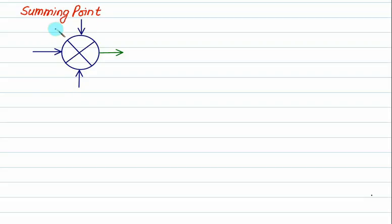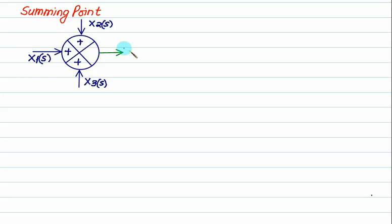A summing point is normally used for adding or subtracting signals. So this signal equals to x1(s), this signal equals to x2(s), this signal equals to x3(s). Depending on whether you want to add or subtract a signal, you put up a sign here. The output has no sign, but each input has a sign — either all plus, or some plus and some minus. It can be minus also.